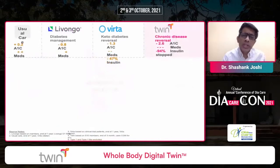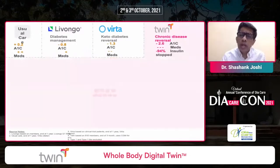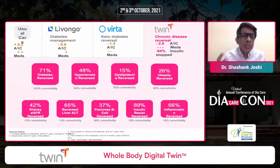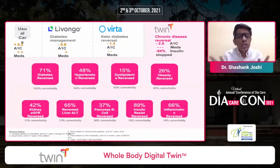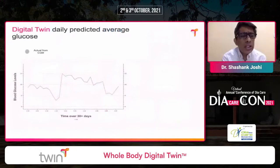There are other systems that can lower chronic disease and diabetes. Livongo drops HbA1c by 8.8, there is a ketogenic reversal diet which reduces it by 1.5, and this new Twin technology has shown in an RCT fashion that diabetes, hypertension, and dyslipidemia parameters can be reversed to a meaningful extent. We need evidence-based approaches.